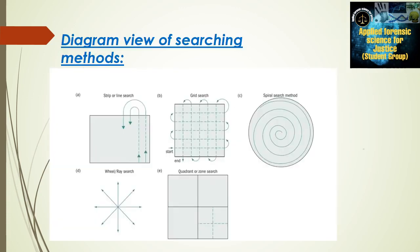This slide includes a diagram view of searching methods. First is the line or strip search pattern. Second is the grid pattern — it is easier to understand by the arrows shown. Next is the spiral method, where we can observe it making an inward spiral. Next is the ray method — the arrows show it making an outward ray search. Finally, the zone method shows a zone divided into four parts, with smaller sections making it easier to investigate.